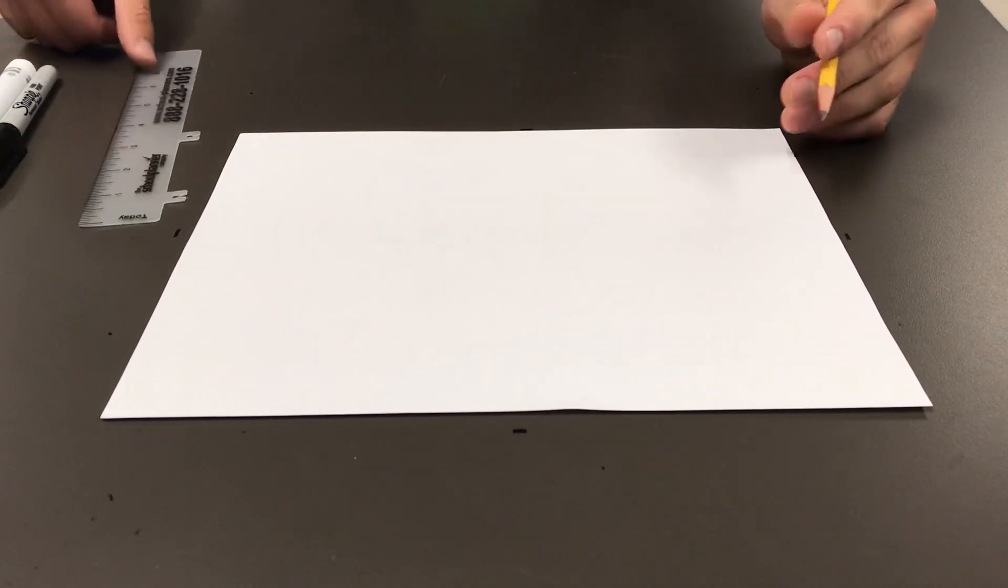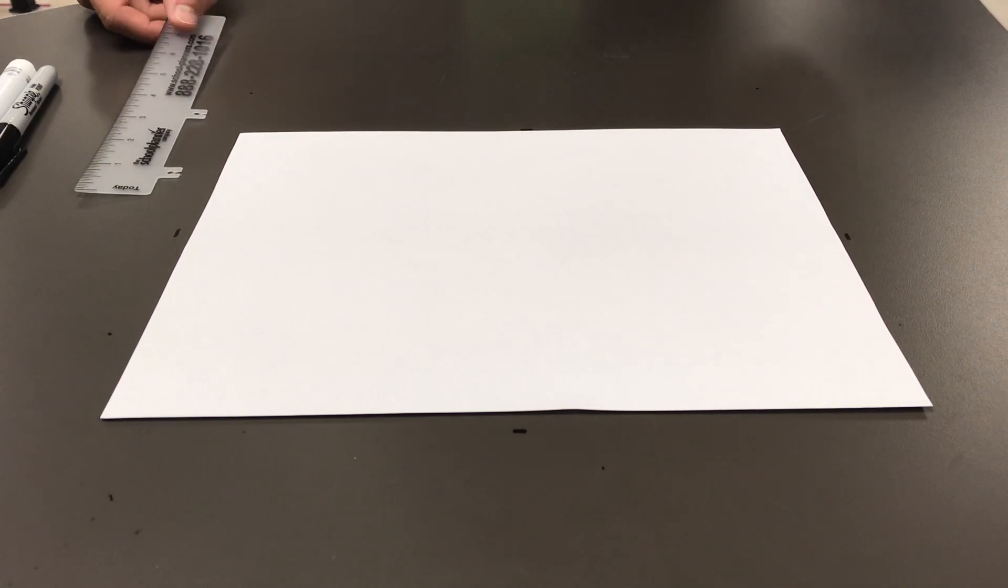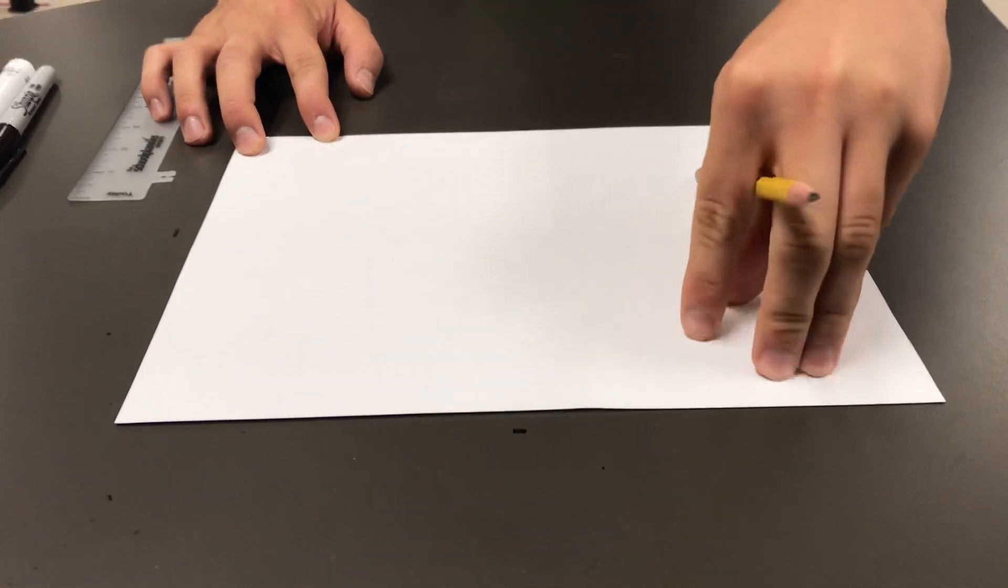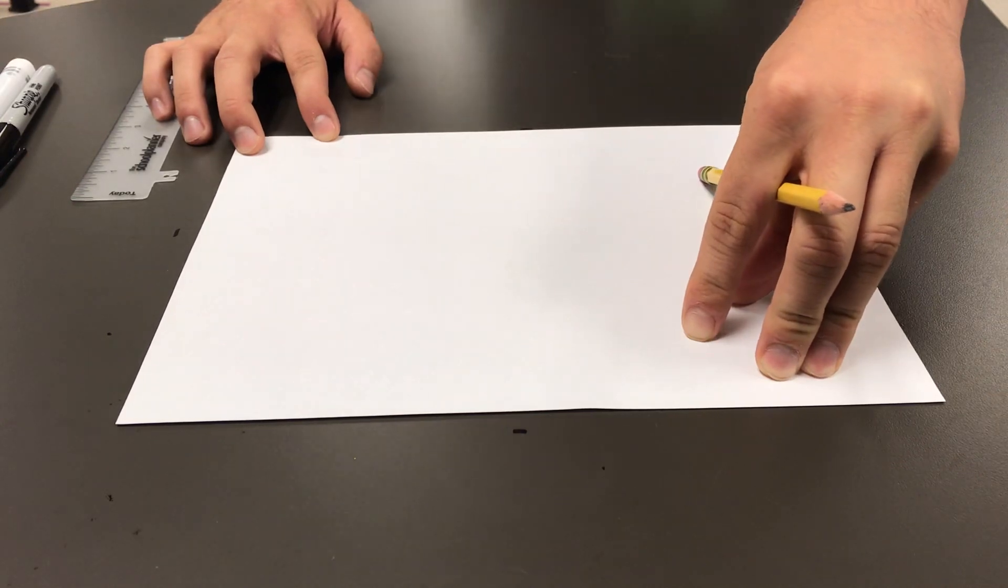To create an interesting composition, you need to try to pull in the viewer by their eyes. And their eyes need to look all around the paper. You don't want to focus on just one spot because then your artwork gets boring for whoever looks at it.